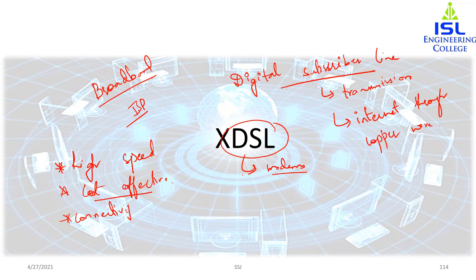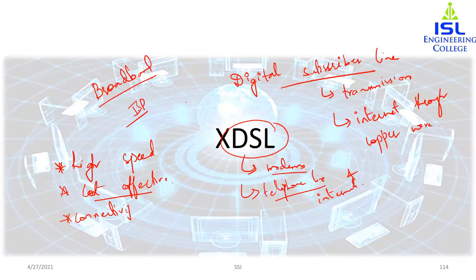With DSL you can use both telephone line and internet at the same time. This is possible because voice is transferred on a different frequency. We are talking about voice transmission and data transmission on the same line, which is achieved using frequency division multiplexing. Voice transmission uses one frequency and data transmission uses a different frequency, so both voice and digital signals are transferred on different frequencies.